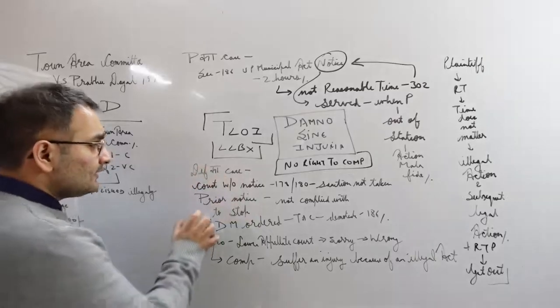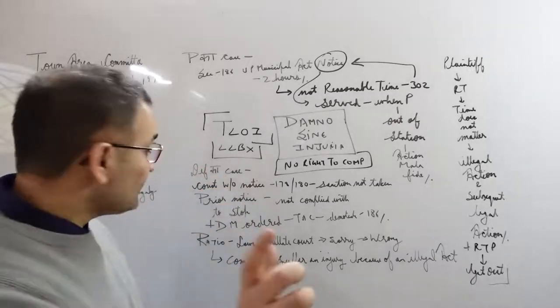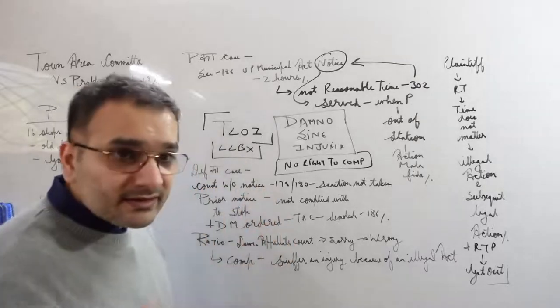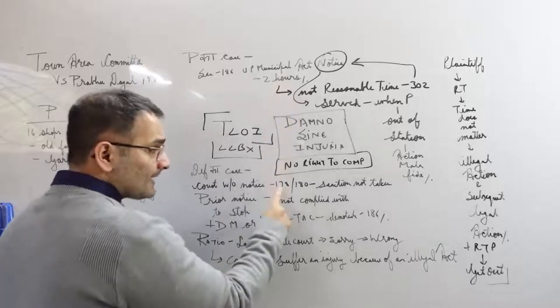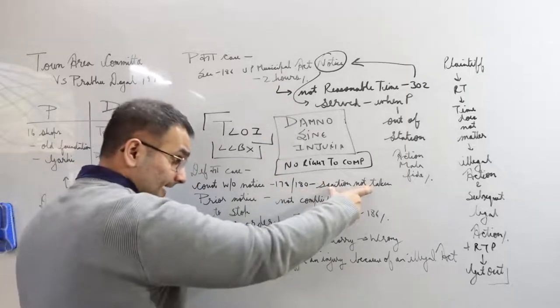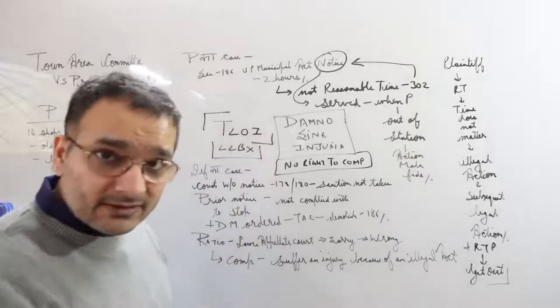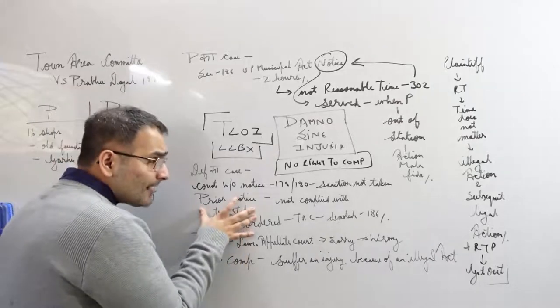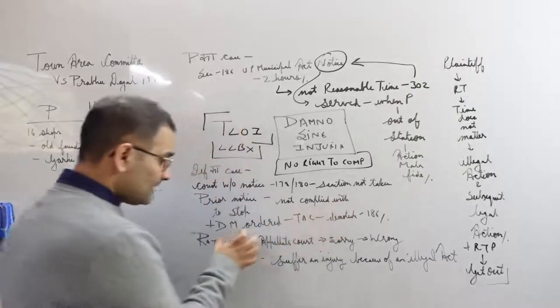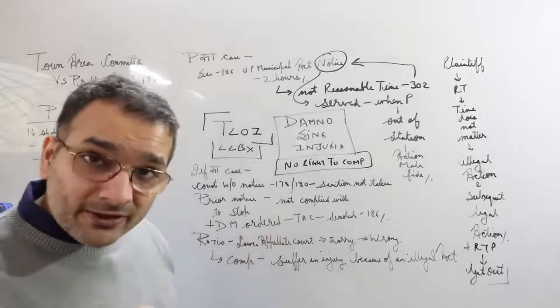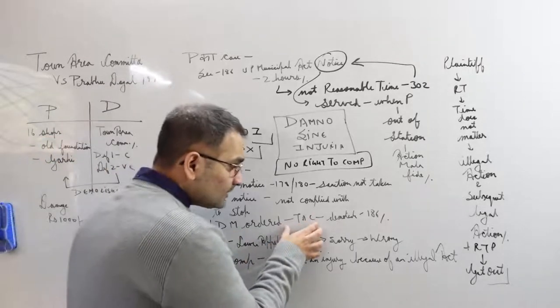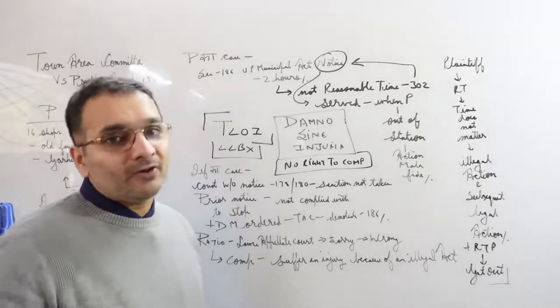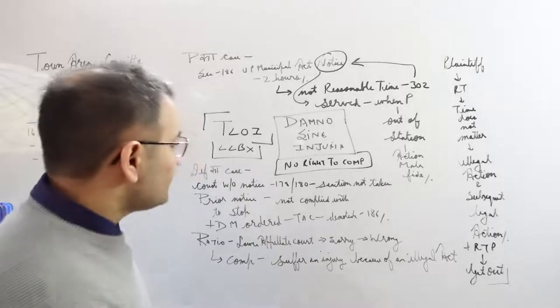Defendant's case is: it was a construction without notice under the same UP Municipal Act under section 170 and 180. You didn't take any sanction from us. So the town area committee is now saying this in court: well, we gave you a prior notice to stop, you never complied with our warnings, then the district magistrate ordered it. They ordered the town area committee to demolish your shops under section 186. So how exactly are we wrong here?